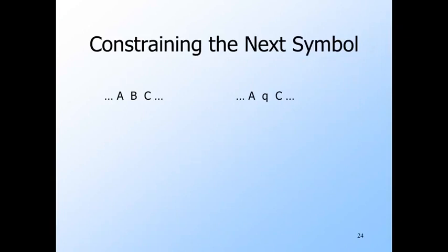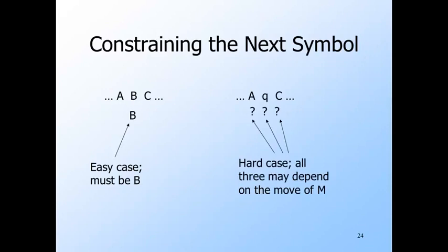To write the expression for moves right, we need to consider both the easy case — where a position holds a tape symbol and so do its neighbors — and the hard case where the state is nearby. In the easy case, there's no doubt that the symbol in position J of the I-th ID is the same as the J-th symbol of the I-minus-first ID. In the hard case, there are three positions — the positions that hold the state in the I-minus-first ID and its neighbors — that can be affected by the move. Moreover, since we're simulating a non-deterministic Turing machine, there may be a choice of move, and we need to coordinate the three positions in the I-th ID to make sure that all three reflect the changes of a single choice of move.